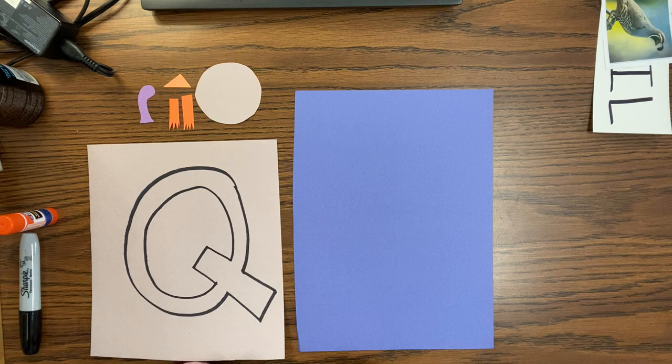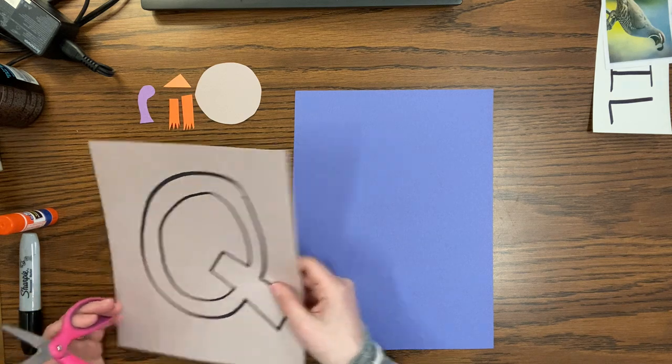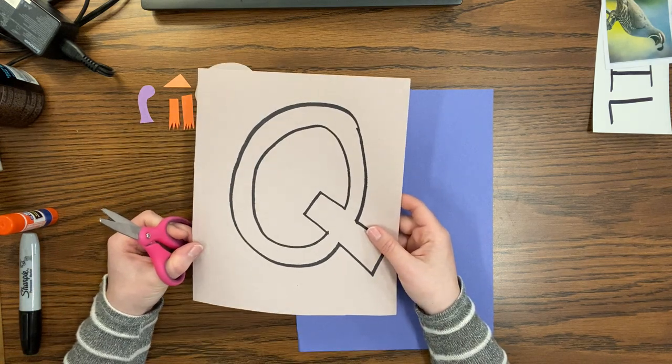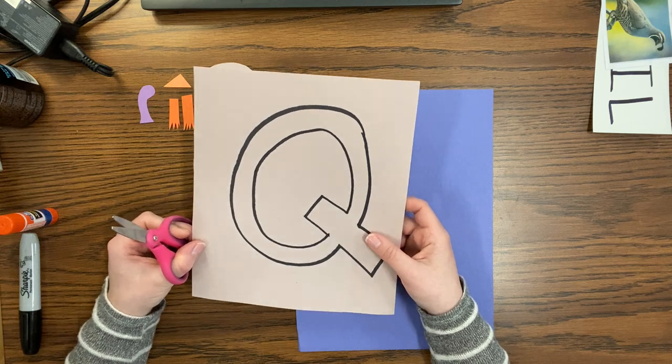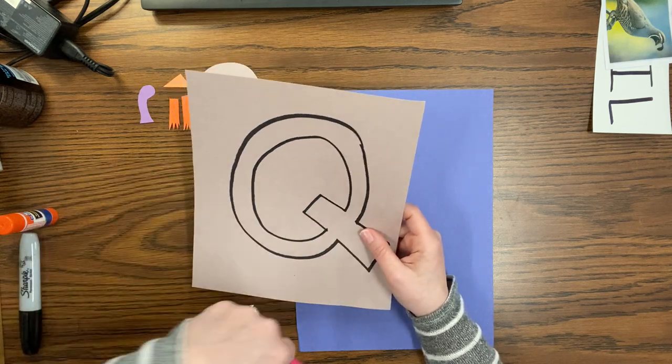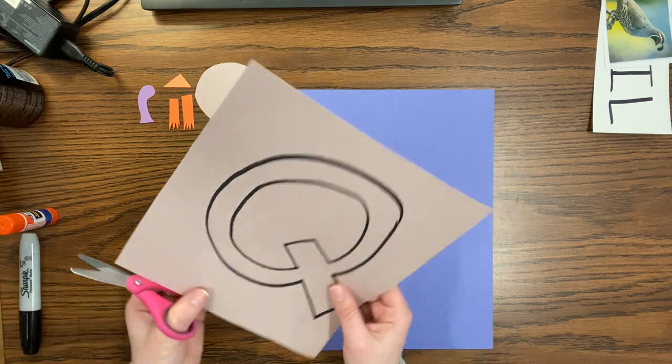So once you have your name written, you're going to cut out the letter Q. If you want to pause it while Miss Kim cuts hers out, you can cut yours out. All right, let's cut.